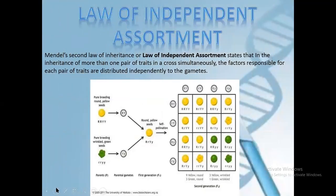Second law — law of independent assortment. Mendel's second law of inheritance states that in the inheritance of more than one pair of traits in a cross simultaneously, the factors responsible for each pair of traits are distributed independently to the gametes.